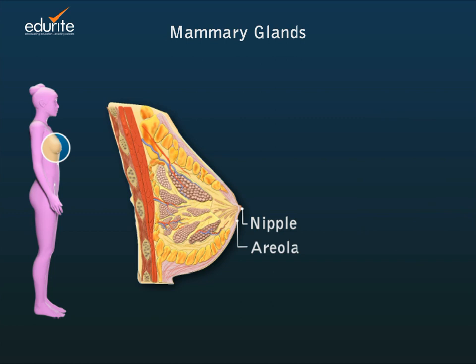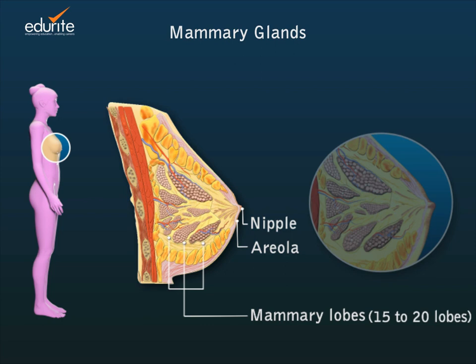The mammary glands are composed of glandular tissue and variable amounts of fat. This glandular tissue of each breast is divided into compartments called mammary lobes, ranging from 15 to 20.